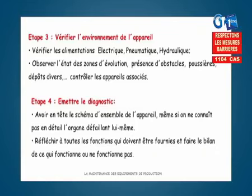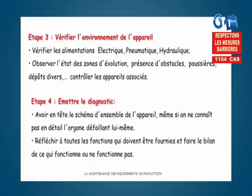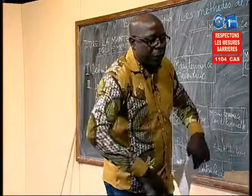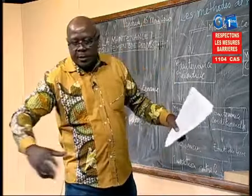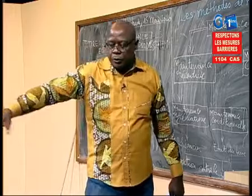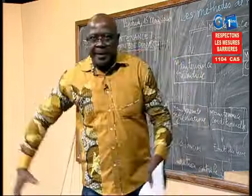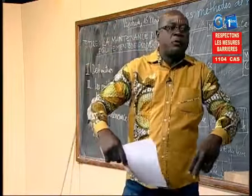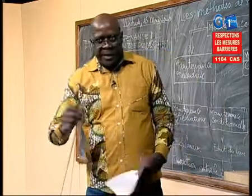Étape 3 : vérifier l'environnement de l'appareil. Il faut vérifier les alimentations électriques, pneumatiques, hydrauliques. Est-ce que c'est un problème pneumatique, hydraulique ou électrique ? Il faut s'assurer de tout ça. Observer l'état des zones d'évolution, la présence d'obstacles, les poussières, les dépôts, le contrôle des appareils associés. Tout ce qui est associé à cette machine défaillante doit être inspecté alentour. Dans un atelier, nous avons généralement une surface d'au moins 20 mètres carrés par poste de travail. S'il y a des auxiliaires associés à cette machine, il faut également les vérifier.